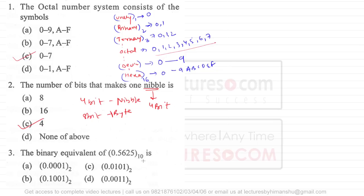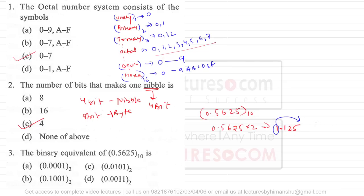Question three asks for the binary equivalent of the decimal number 0.5625. To convert this to binary, we multiply by 2. So 0.5625 × 2 = 1.125 — we take the digit 1. Then 0.125 × 2 = 0.250 — we take 0. Then 0.250 × 2 = 0.50 — we take 0.